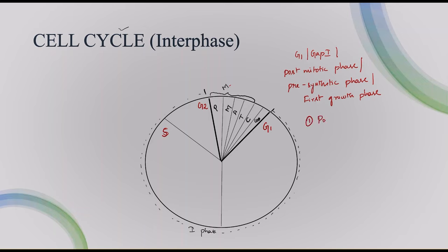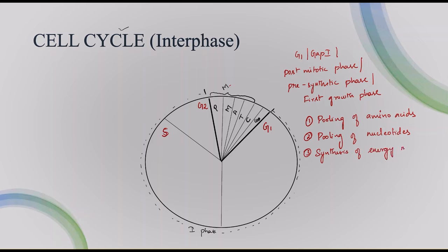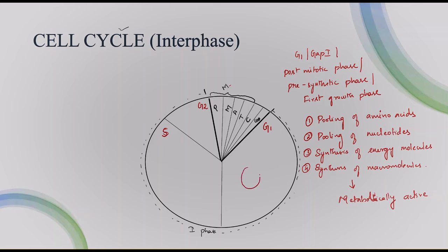In G1 phase, the first thing is there will be the pooling of amino acids, because proteins are made up of amino acids. The second thing is pooling of nucleotides for the synthesis of RNA molecules. There will also be the synthesis of energy molecules needed for DNA duplication in the next stage, and synthesis of macromolecules such as carbohydrates and lipids. Basically in G1 phase, the cells are metabolically very active.